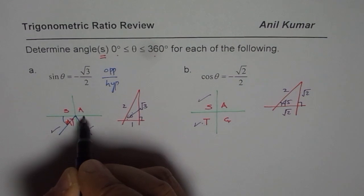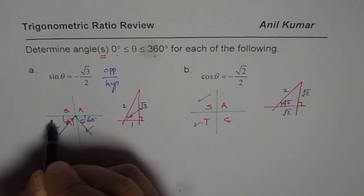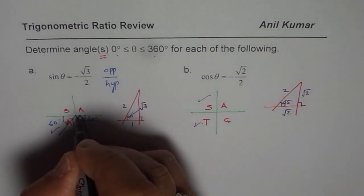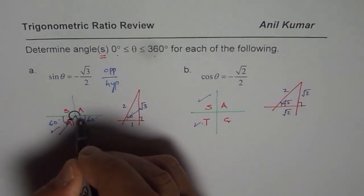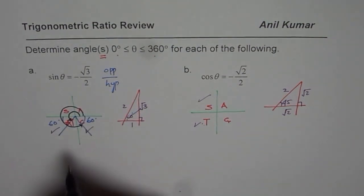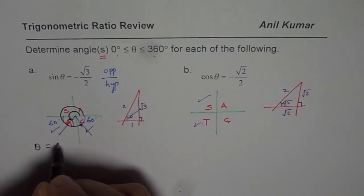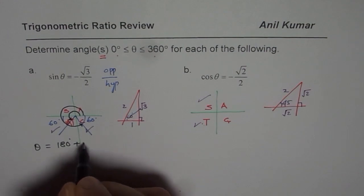Now, the answer always is the principal angle. So the principal angle is 180 plus 60 and 360 minus 60. So we get angle θ equals 180 degrees plus 60 degrees—that is one answer, 240 degrees.